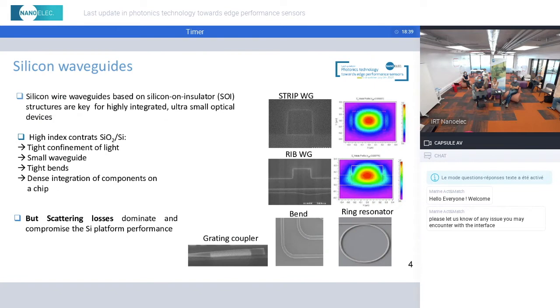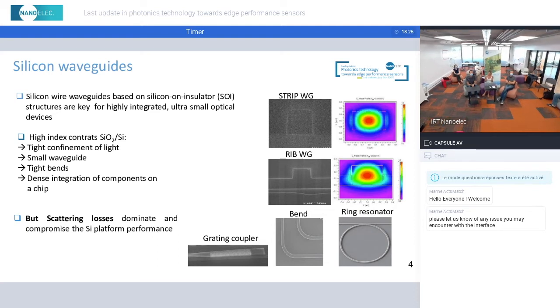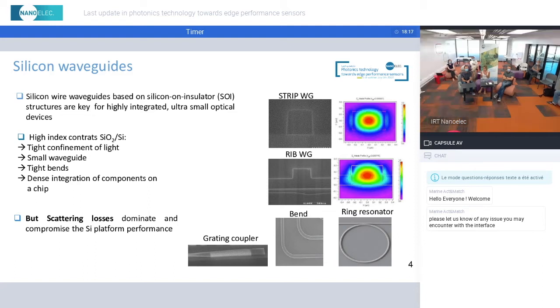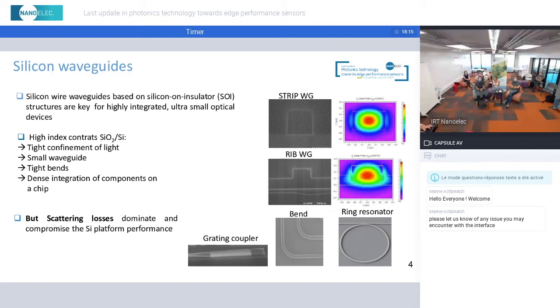In a silicon platform, the silicon waveguides are elaborated in the silicon material of the silicon-on-insulator substrate. This high-index contrast between the silicon and the silicon dioxide offers tight confinement of light. That means that the light can be routed in very small waveguides and tight bends, and this means that we can fabricate dense and compact optical components with a small footprint.